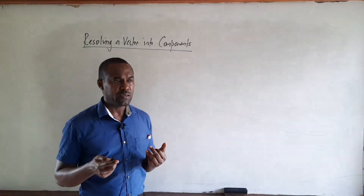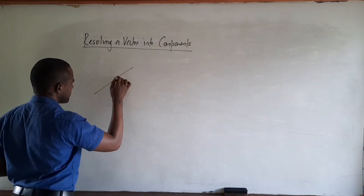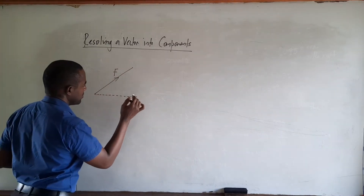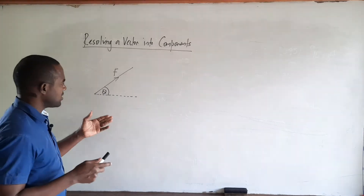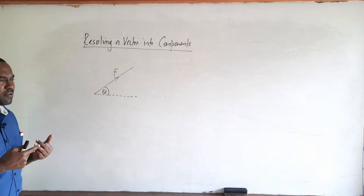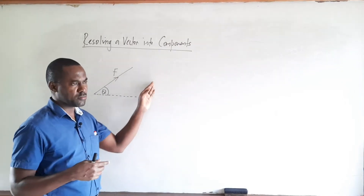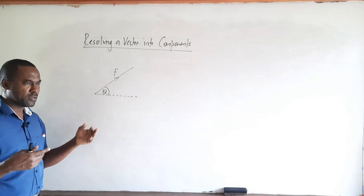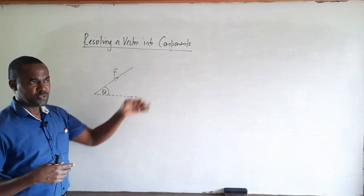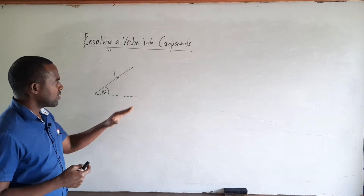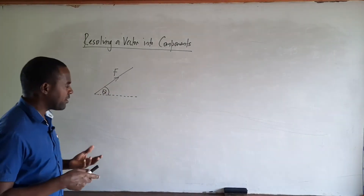Suppose we have a force F acting at some angle theta to the horizontal. This force will basically have an effect in the X or horizontal direction, and it will also have an effect in the Y or vertical direction. If this force is acting on an object which is allowed to move, the object will not only move horizontally but also vertically. So we can, therefore, resolve this force into its components by forming a right-angled triangle.